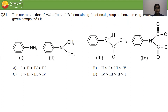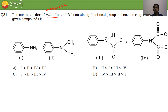Question 81: find the correct order of mesomeric (M+ or plusI) effect of nitrogen-containing groups on a benzene ring. Groups that donate electrons to the ring show the plusM effect. Aniline (NH₂) and dimethylamine (N(CH₃)₂) groups donate electrons; acetamide groups (NHCOCH₃) withdraw electrons.